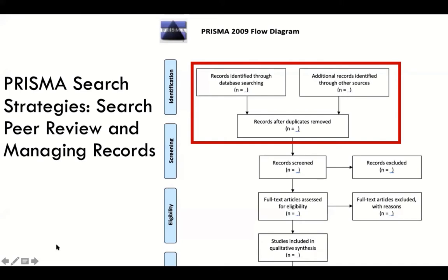This takes us back to our PRISMA documentation. The PRISMA flow diagram shows us what we are doing in the searching stage — we're identifying through every database a number of records. After searching several databases selected based on subject coverage and relevance, we then deduplicate the results. We can use a reference manager for that, something like EndNote, or even Covidence itself, although it's much better to use EndNote.